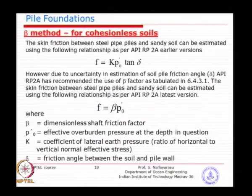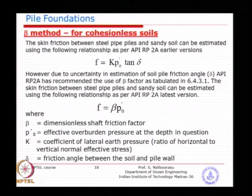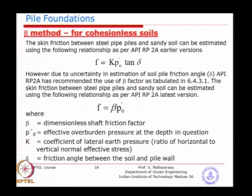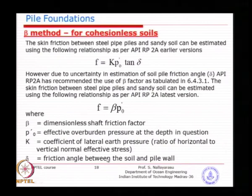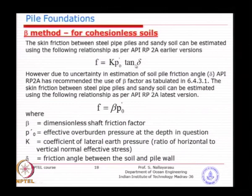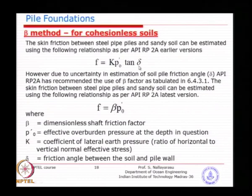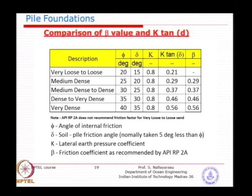For the beta method used for sand, the parameter K (ratio of horizontal to normal stress) is relevant. For open-ended steel pipe piles, the amount of soil displaced when driving is very limited, so a lower K value is used. In the later part of the code, the parameter beta replaced k × tan(delta), where delta is the pile-soil friction angle. The revised code directly provides beta values in a table rather than k and delta separately, to prevent misuse with very loose material.